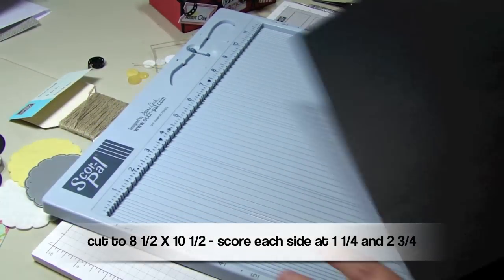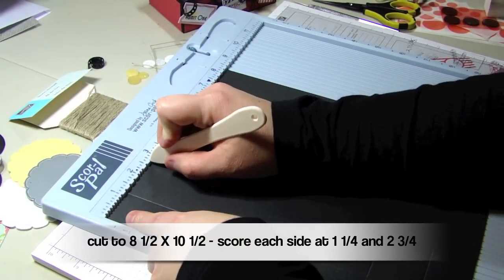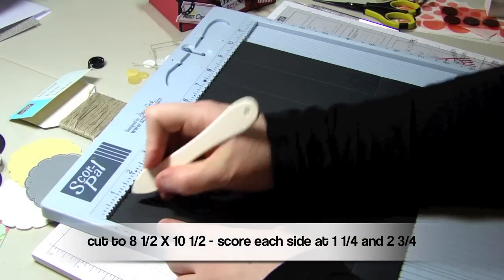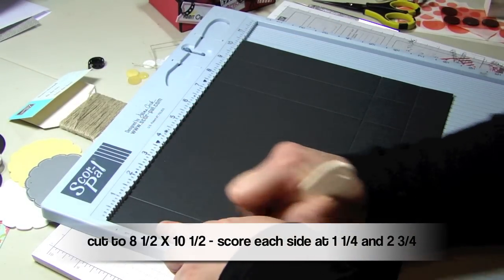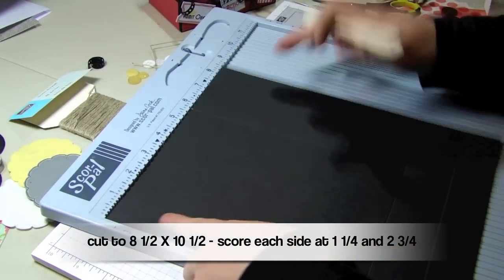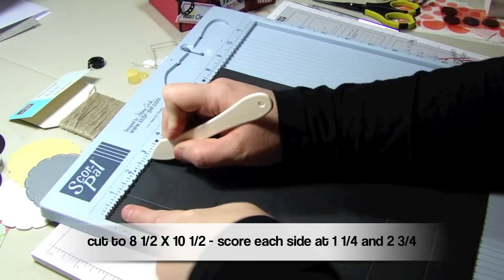You can see I use my ScorePal for this. I find it much easier than moving my paper within a paper trimmer and using the scoring blade. It's nice and easy, it's got a large platform base, and I can knock out all eight of these score lines relatively quickly. Let's just finish up the last one here.